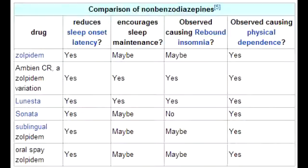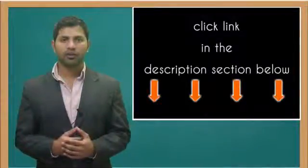Describe the duration of action of non-benzodiazepine hypnotics. Non-benzodiazepine hypnotics have a short duration because of rapid metabolism by liver enzymes. Unlike other sedative hypnotics, they only cause modest day-after psychomotor depression and few amnestic effects. They also have a lower dependence risk than benzodiazepines.